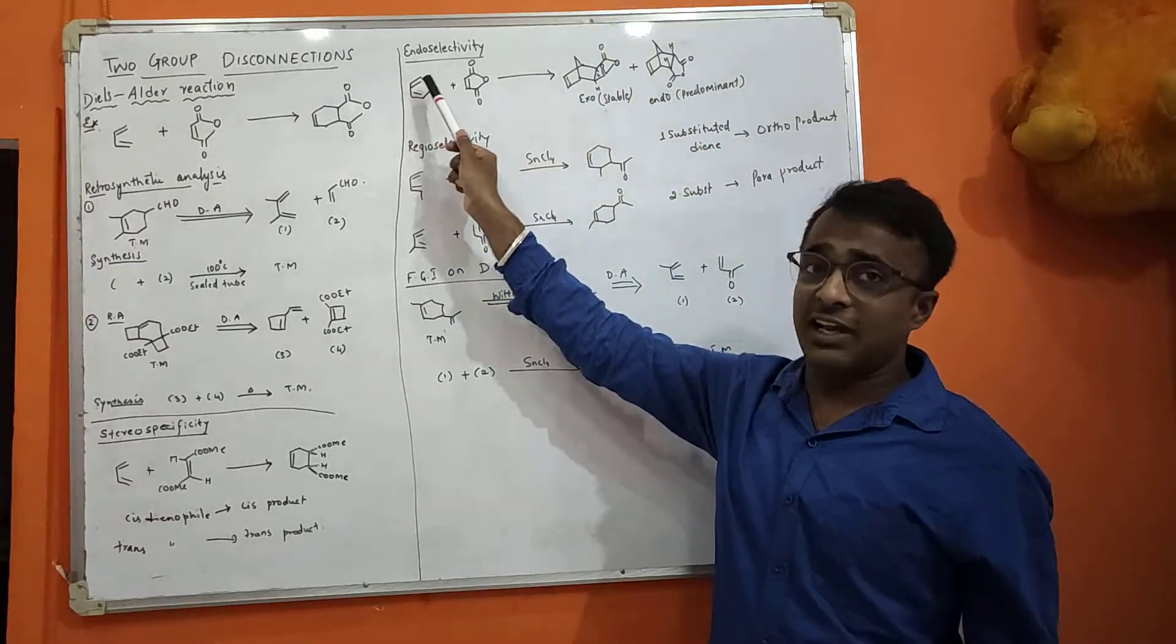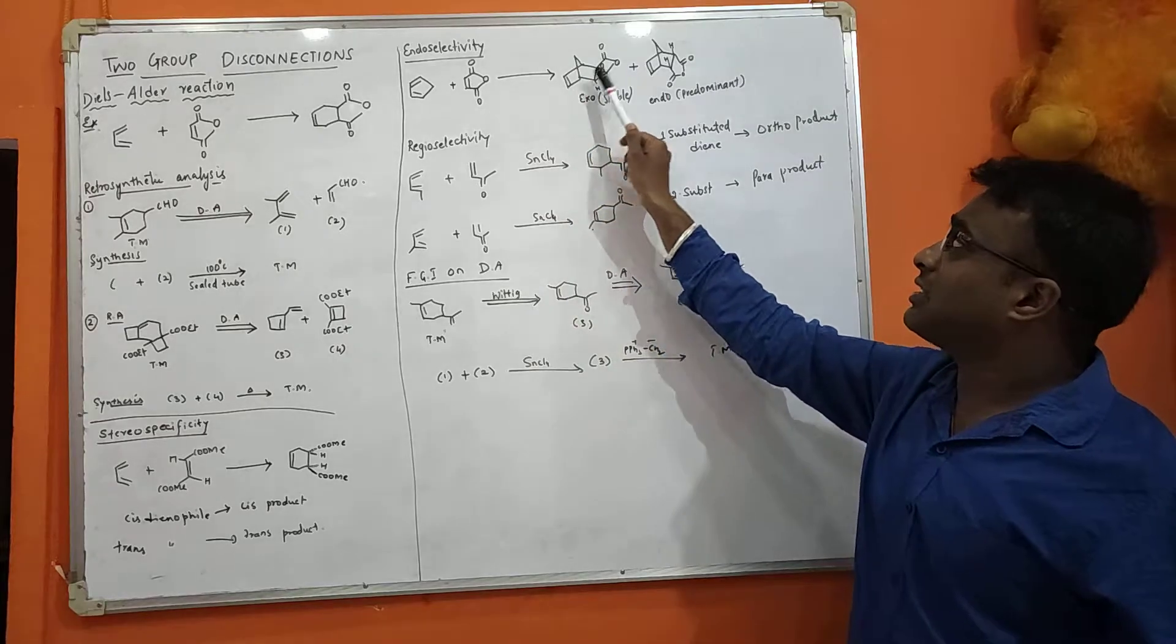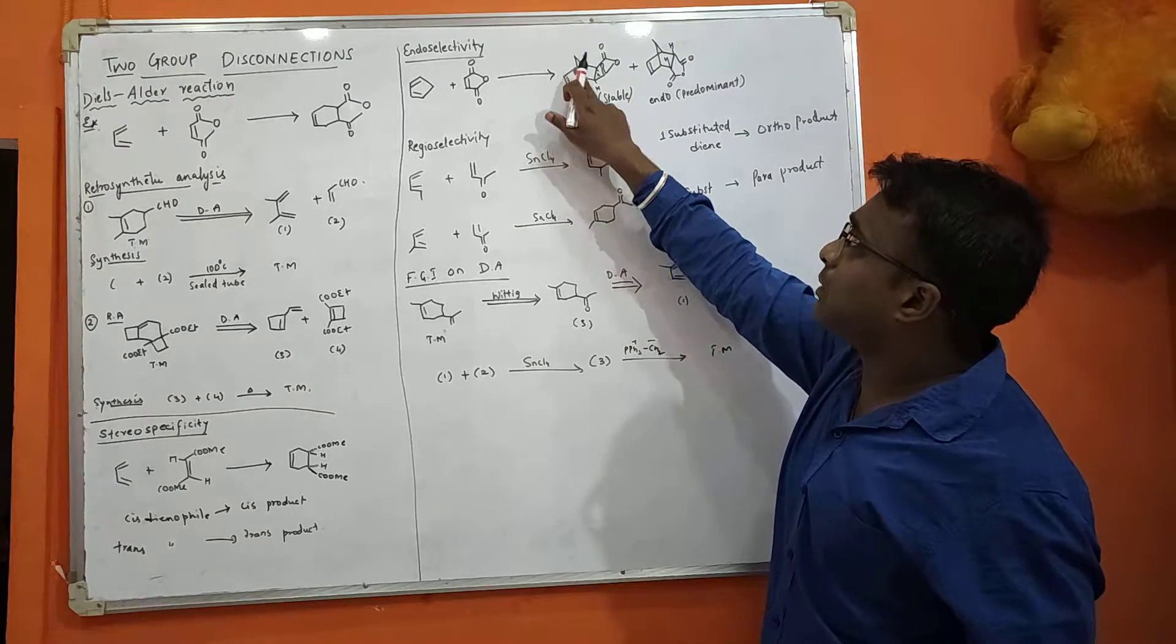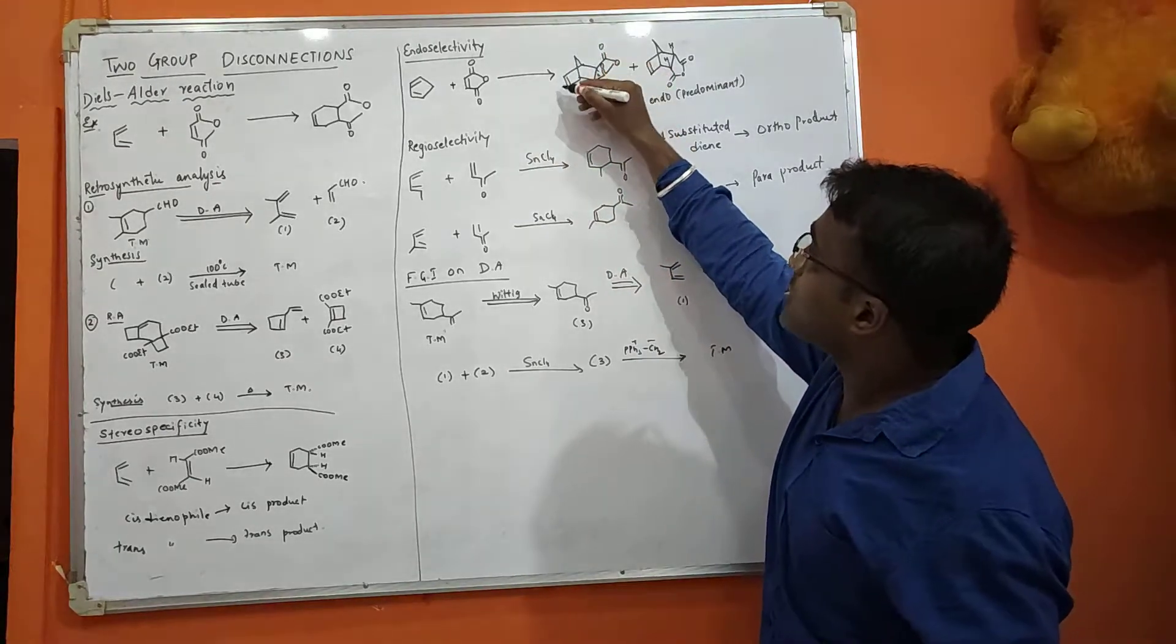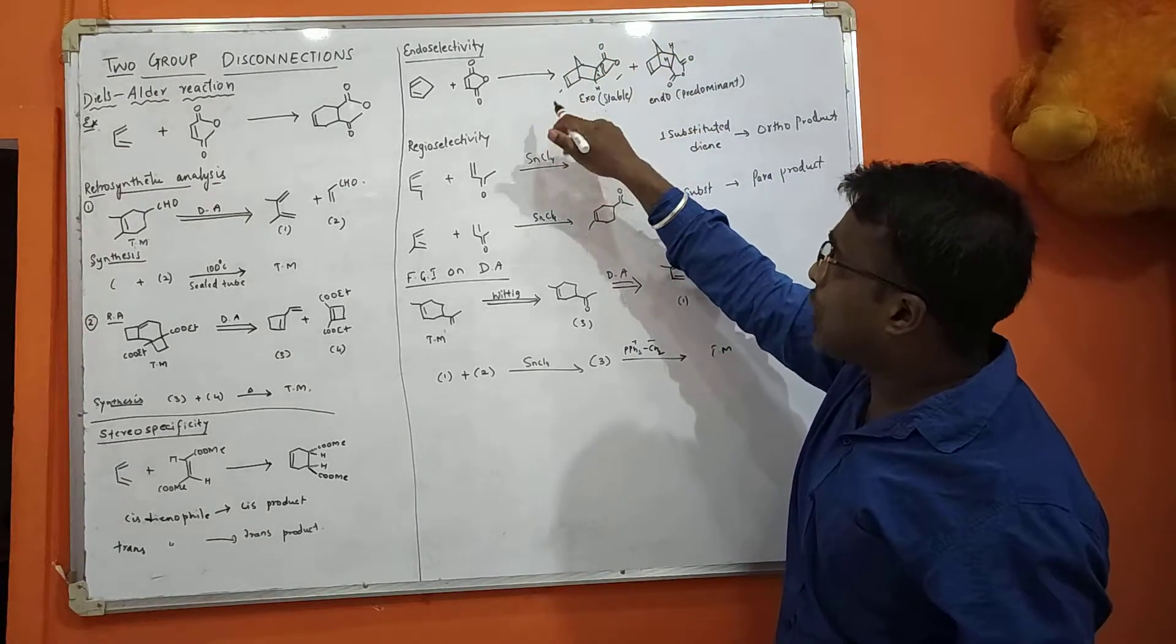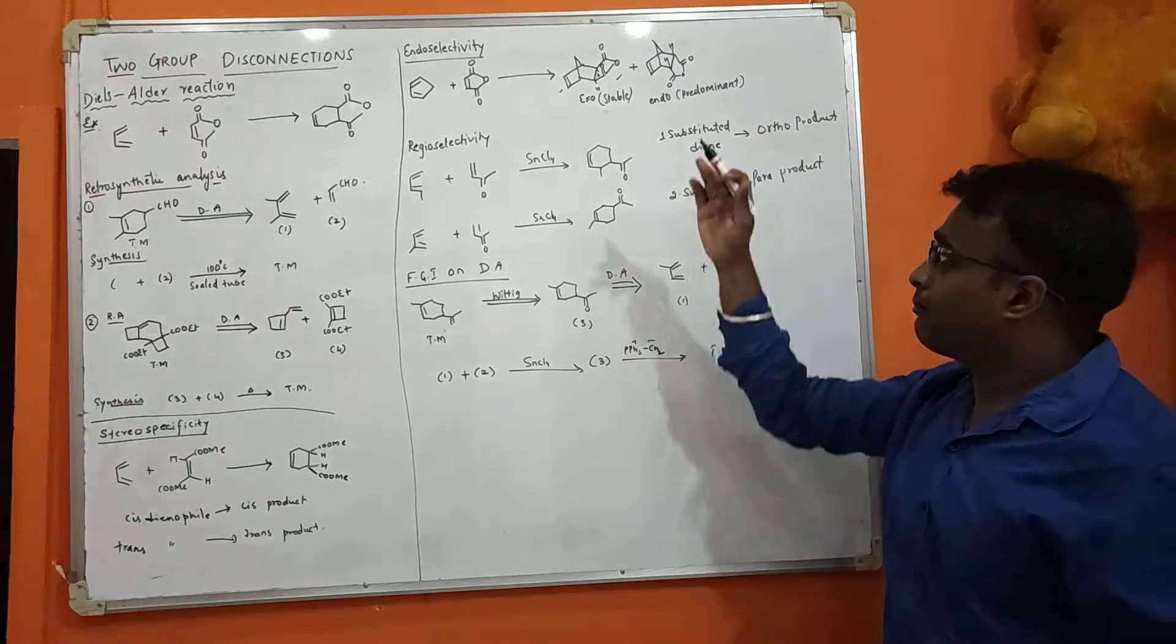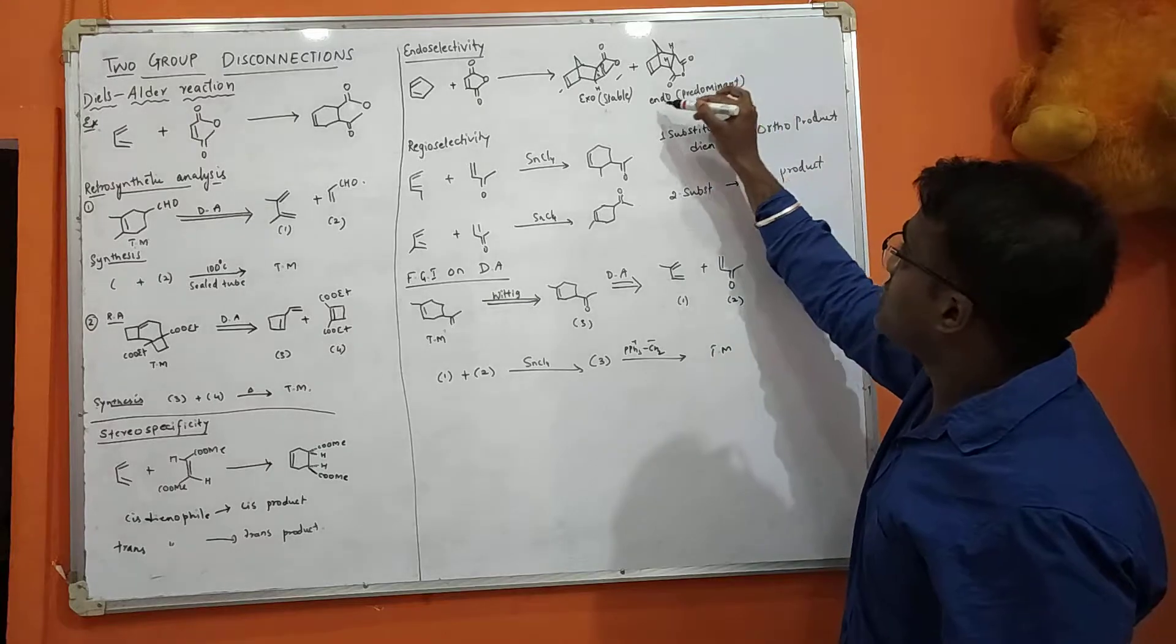Can you see this diene and dienophile? We are getting these two structures. What is exo? Very simple to remember. This double bond and this part—this part and this part. This is down, this is upside. Here, both are bent downside. So this is endo product.